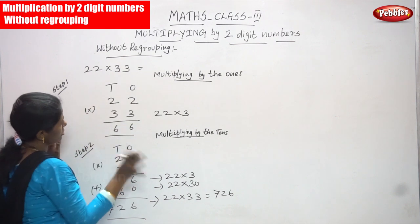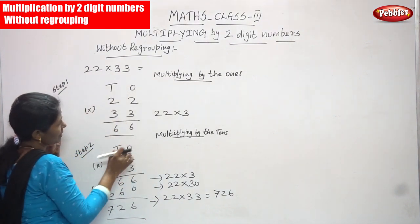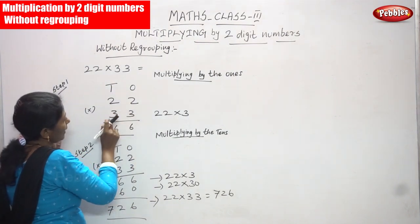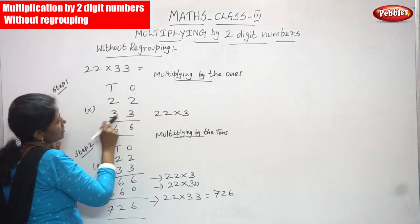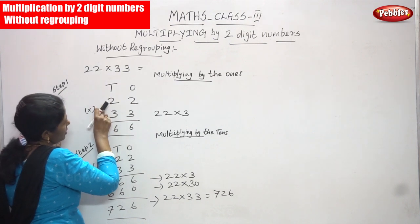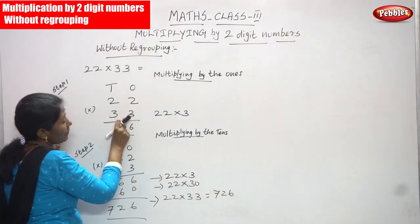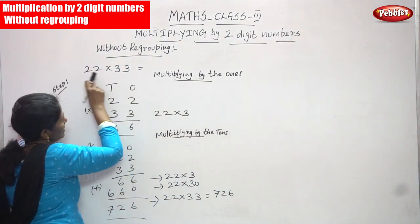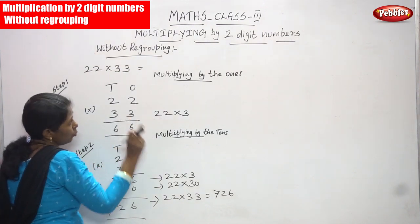I am going to multiply by the 1's. So 22 and 33 - in the 1's place, what is the number? That is 2 in the 1's place and 2 in the 10's place. So 22 is going to multiply by 3, because I am going to multiply 22 as a number by 3, that is 3 ones.